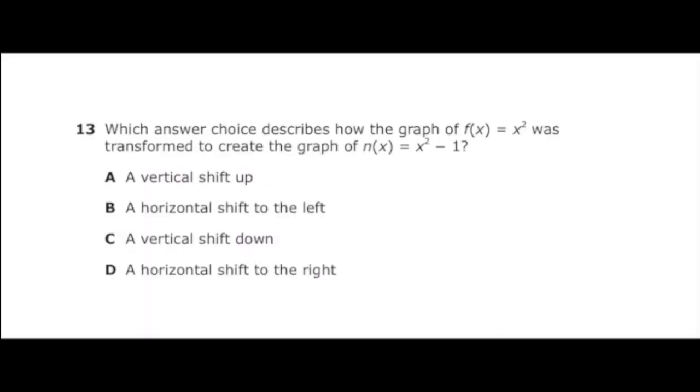You need to know how to do this on the Algebra 1 EOC. Which answer choice describes how the graph of f(x) = x² was transformed to create the graph of n(x) = x² - 1. So this is a simple transformation. And the only thing that's changing from the parent function f to the function n is that we're tacking on a minus one at the end. And you should know that plus or minus at the end of a function just moves it either up or down. So if we add a number, we move it up. If we subtract a number, we move it down. So in this case, it should be a vertical shift down, which is letter C.